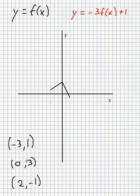Then we have (0, 3). This point will be affected on the y value. It's going to go down to -9, so right here, because of the reflection and the expansion.